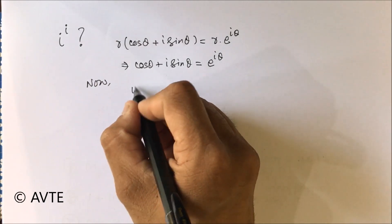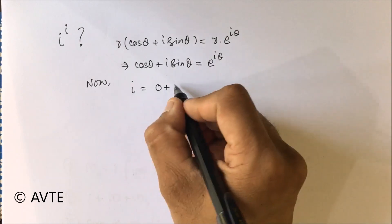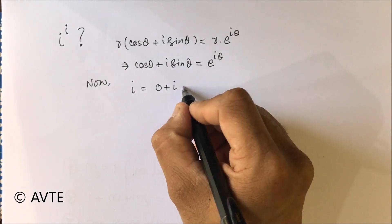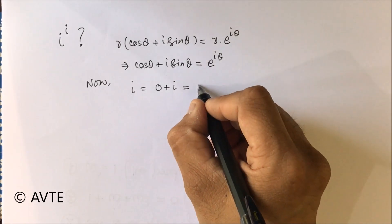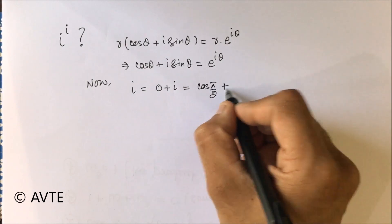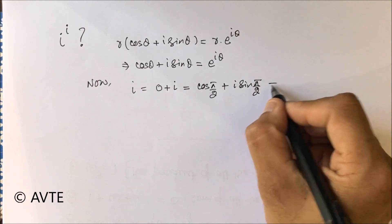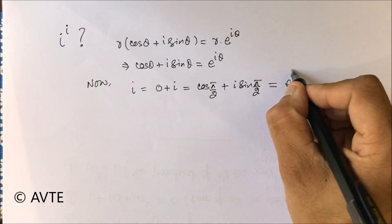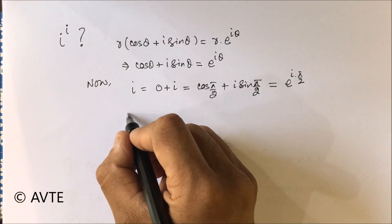Now, what is iota? Iota is purely imaginary, so we can take it like this: zero plus iota. Further, if we convert this into polar form, we can make it... so obviously this can be taken as e to the power i times pi by 2.